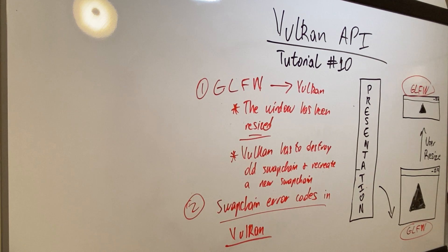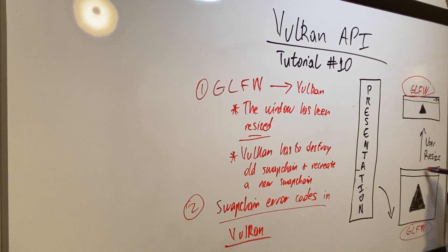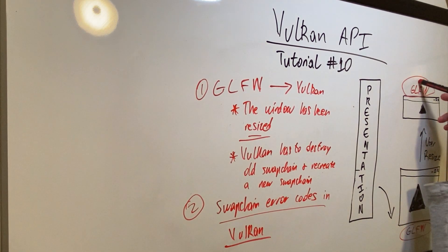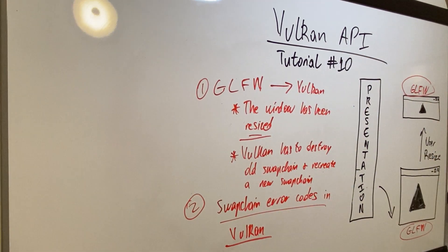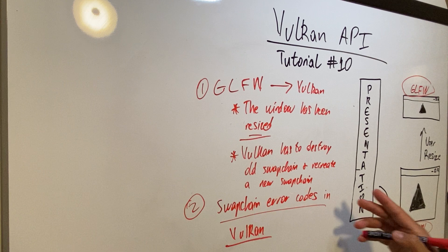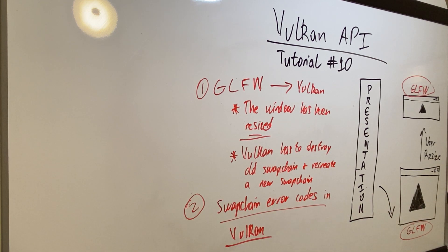The important thing to understand is that GLFW manages the windowing system. So when the user changes the size of the window, GLFW communicates to Vulkan that the window has been resized and you need to process accordingly, which in Vulkan terms means you have to destroy the old swap chain, recreate the new swap chain with appropriate images that can accommodate the window size.